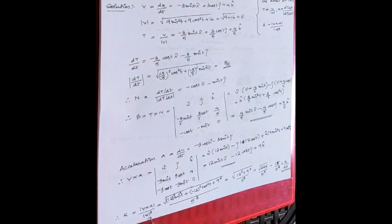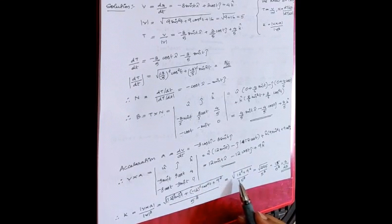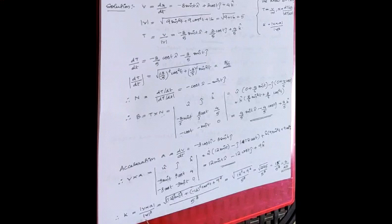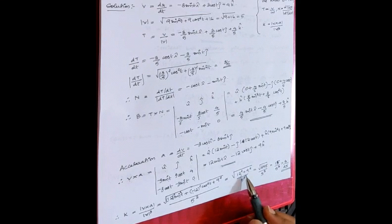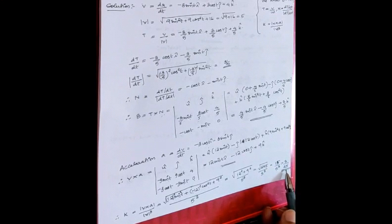Therefore κ = |v×a|/|v|³. The magnitude |v×a| = √(12² + 12² · (sin²t + cos²t) + 9²) — since sin²t + cos²t = 1, this gives √(144 + 81) = 15. With |v| = 5, |v|³ = 125. Therefore κ = 15/125 = 3/25.